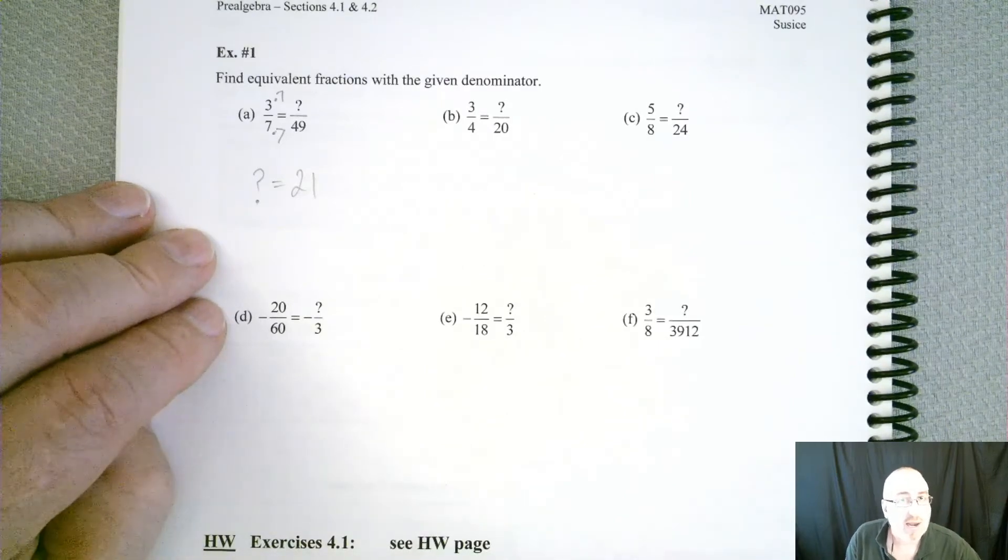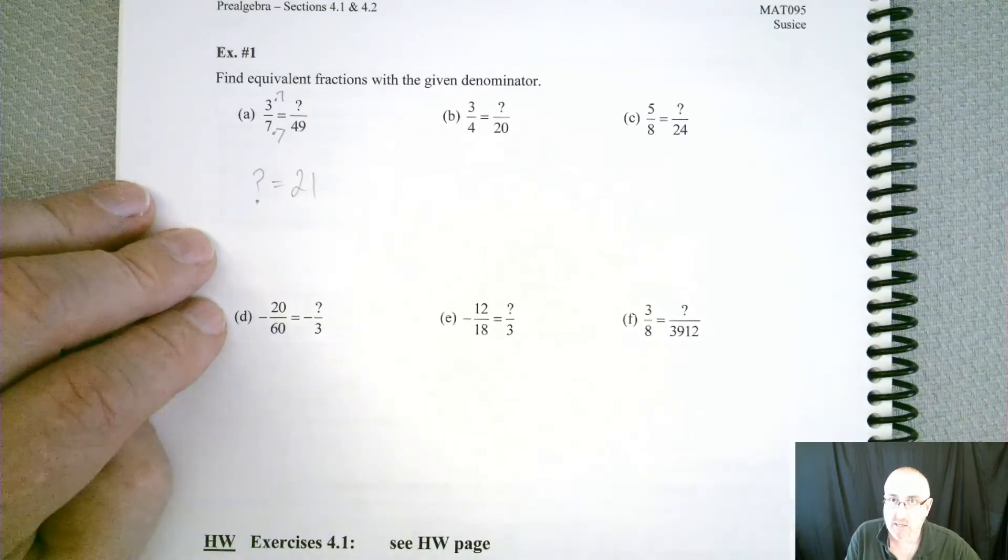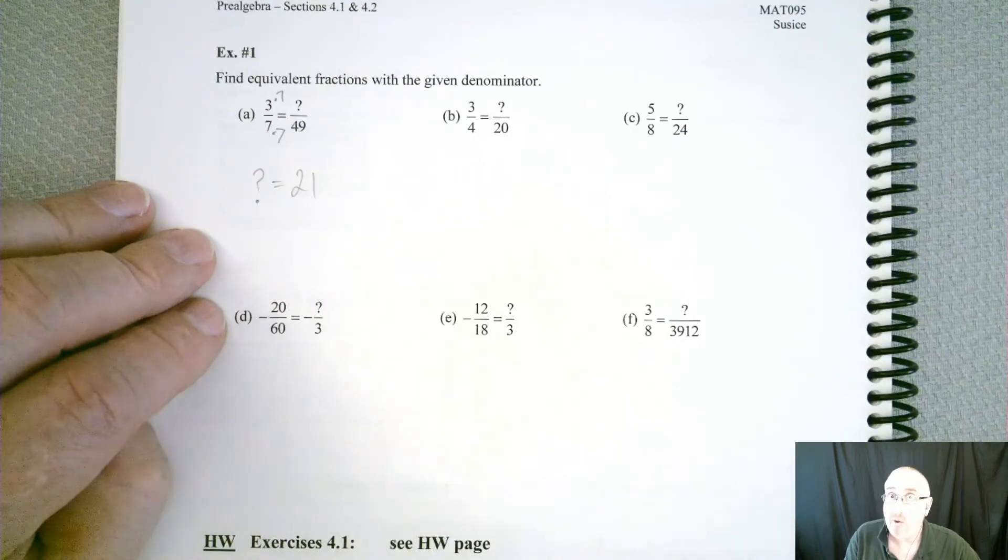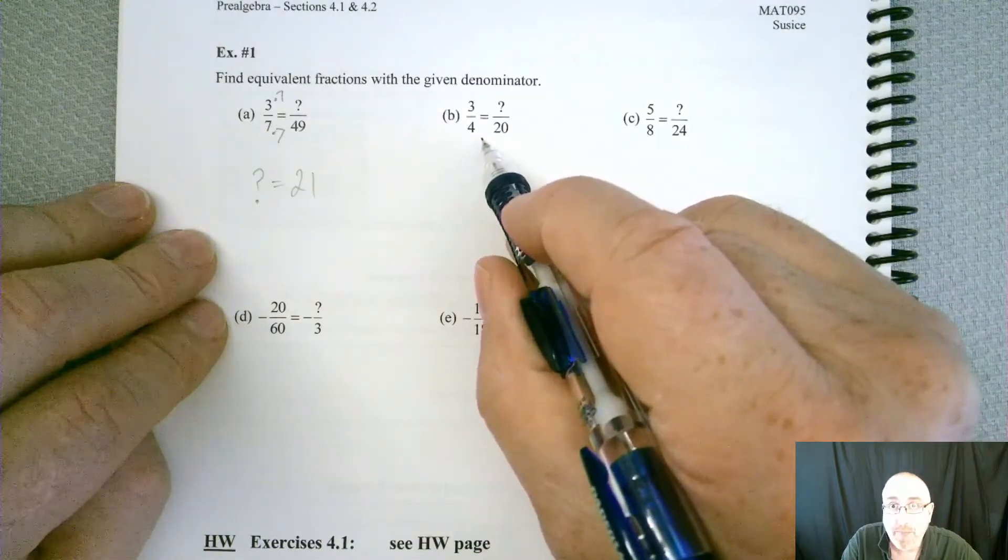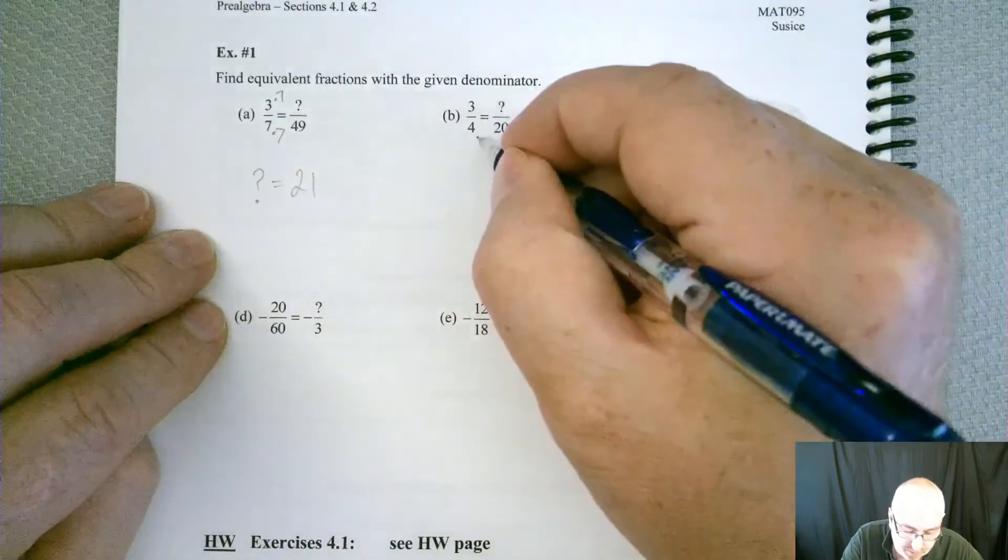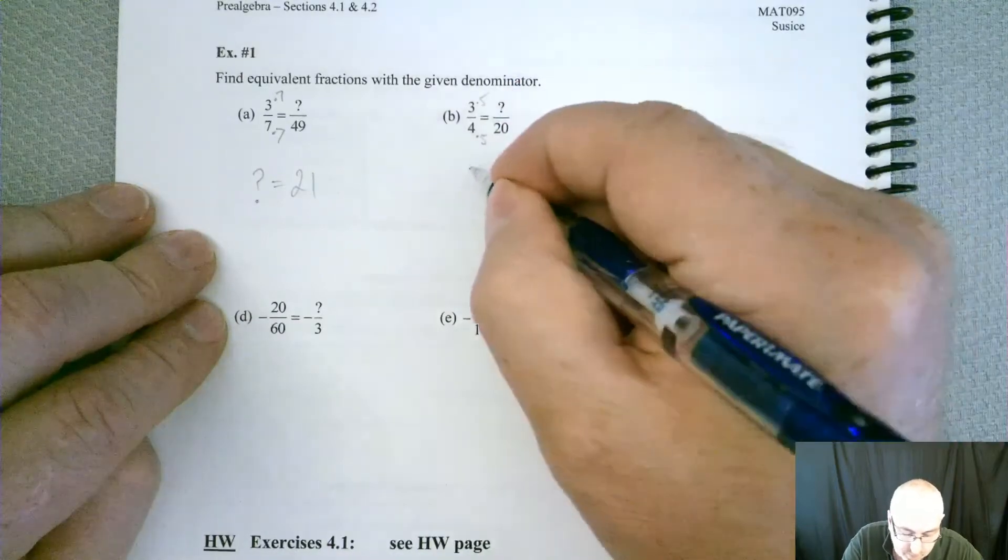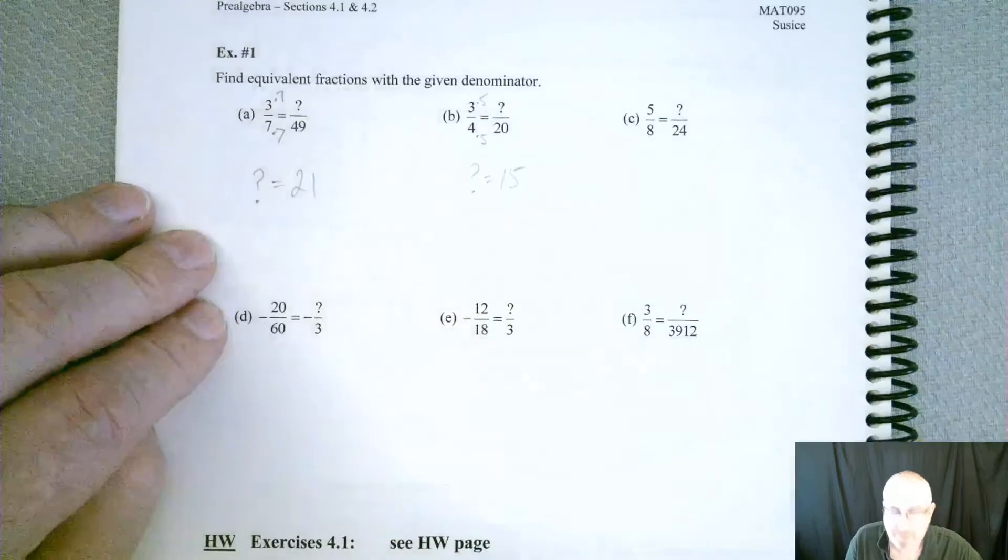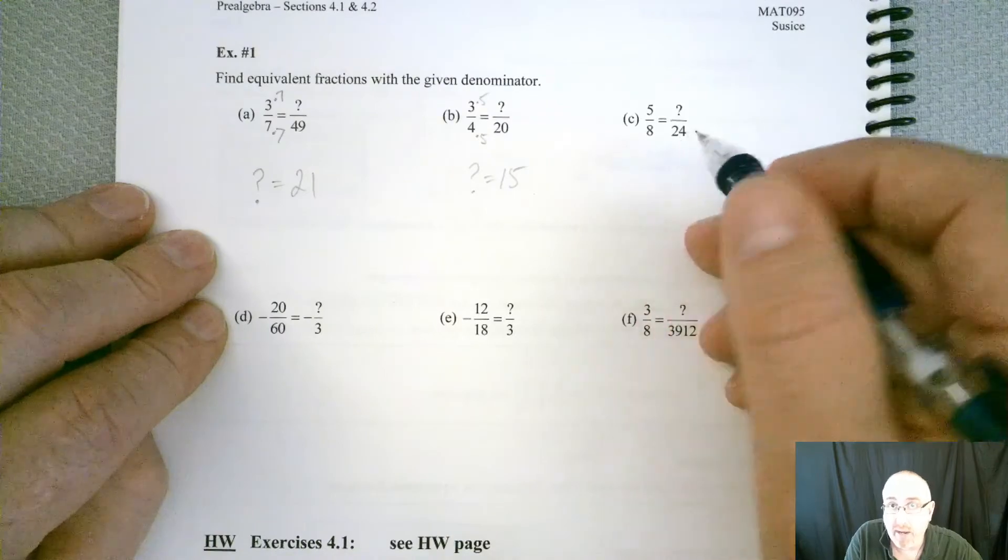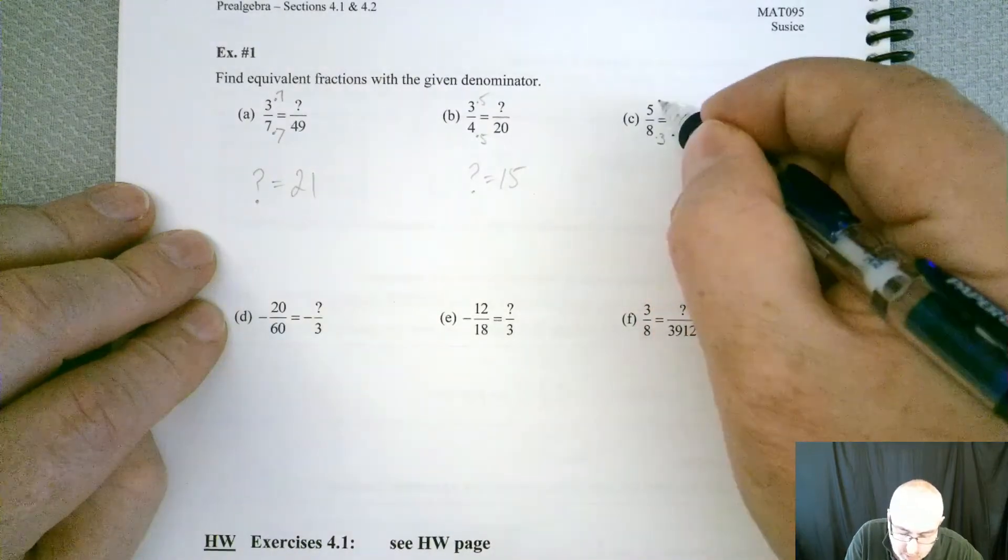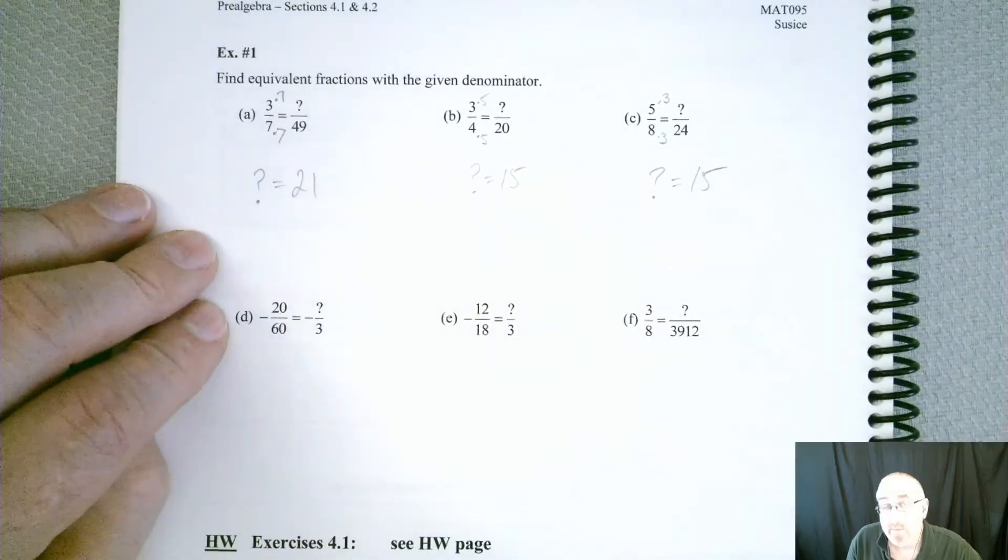And that's all they want you to do, is just to determine what that question mark has to be. We're going to see other techniques used later on, but right now we're just looking at it and saying, what did I multiply by or what did I divide by to get to my new denominator. So in this case, we had to multiply by 5. 4 times 5 is 20, so if we multiply this one times 5, that gets us to 15. What about the next? We're going from 8 to 24, so we had to multiply by 3. And so that means our question mark has to be 15 again.